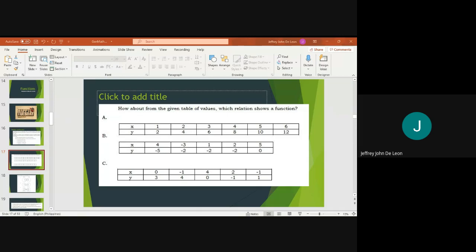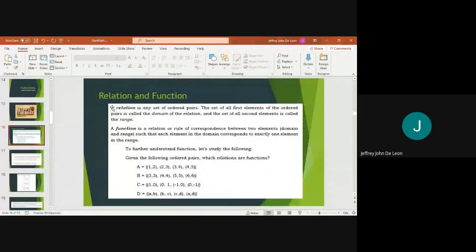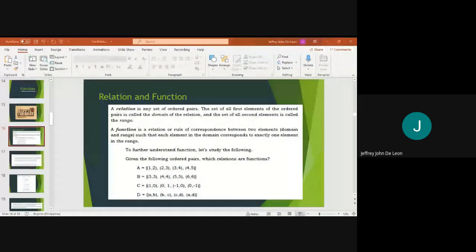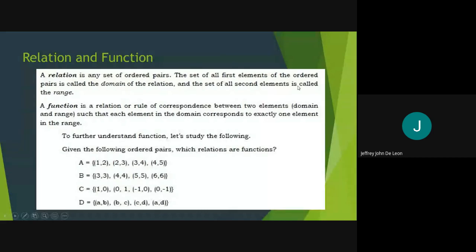Okay, let's start. Again, relation and function. Relation is any set of ordered pairs. The set of all first elements of the ordered pairs is called the domain of the relation, and the set of all second elements is called the range. While a function is a relation or rule of correspondence between two elements, the domain and range, such that each element in the domain corresponds to exactly one element in the range.